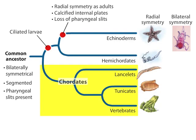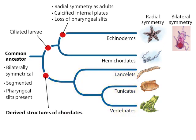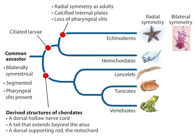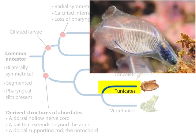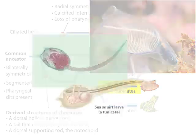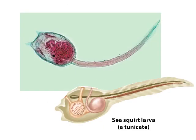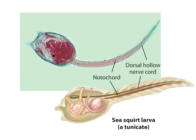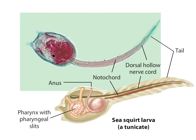Chordates are also deuterostomes. As adults, the three groups of chordates couldn't appear more different, yet their relatedness is evident in many cases by comparing larval or embryo stages. At some stage in their development, all chordates display several derived structures: a dorsal hollow nerve cord, a tail that extends beyond the anus, and a dorsal supporting rod called the notochord. A sea squirt is a marine filter feeder in the group of tunicates. Tunicates lose their notochord as they develop into adults, but their larval forms display all the chordate features — a notochord, a dorsal hollow nerve cord, and a tail that extends beyond the anus. You can also observe the pharyngeal slits that mark tunicates as members of the deuterostome group.